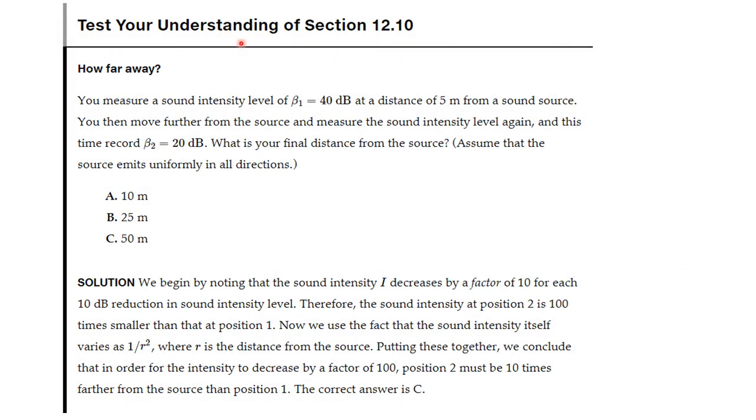Let's test your understanding of this with an example. You measure a sound intensity beta 1 equal 40 dB at a distance of 5 meters from a sound source. You then move further from the source and measure the sound intensity level again. And this time you record the sound level is beta 2 is equal to 20 dB. What is your final distance from the source? It could be 10, 25, or 50.